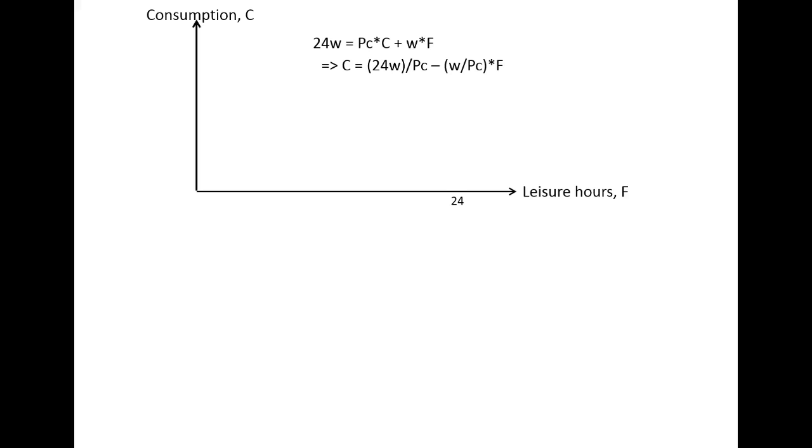If I don't work, I will not receive any money. If I don't receive any money, that means that I can't consume anything, so the consumption will be zero. On the other side, we have this vertical intercept here, 24 times the low wage rate W1, divided by the price of consumption, PC. There you have the normal budget constraint.